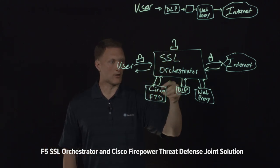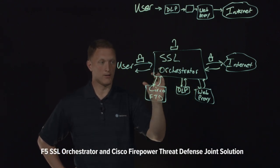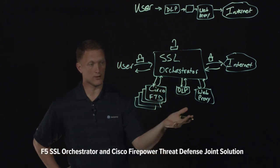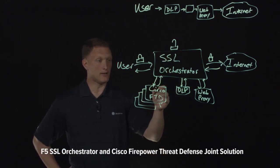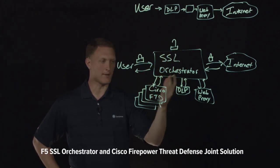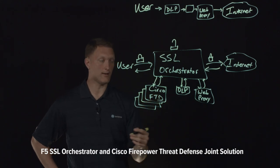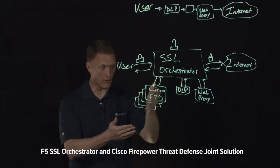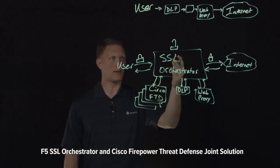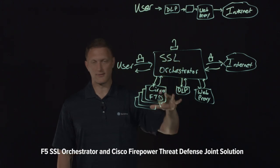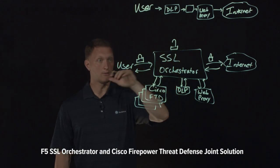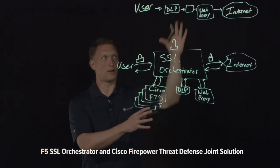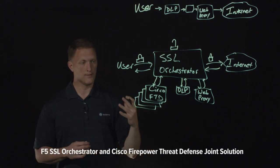The SSL Orchestrator monitors all security devices and knows their real-time status. If you have a pool of Cisco FTD devices and one goes down, the SSL Orchestrator can load balance to the remaining devices — allowing all of them to be fully active at all times rather than requiring an active-standby setup. It also provides cipher diversity with a wide range of TLS cipher suites, eliminating the blind spots that occur when individual daisy-chained devices can't handle certain cipher suites.